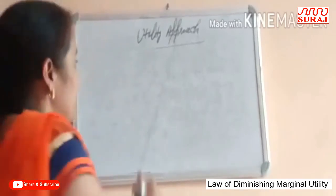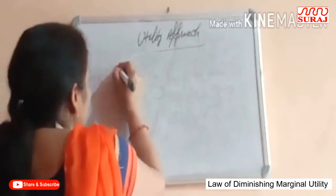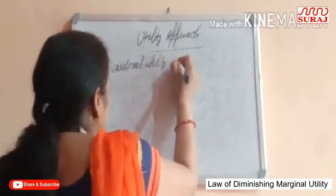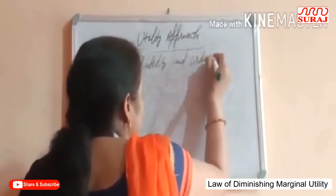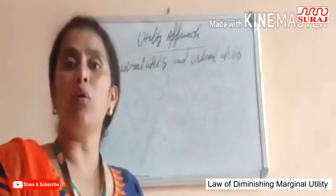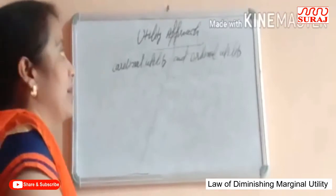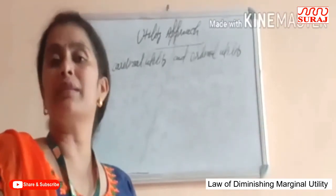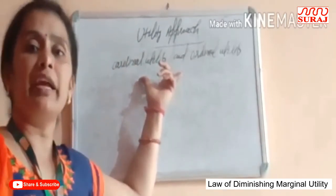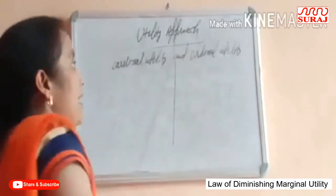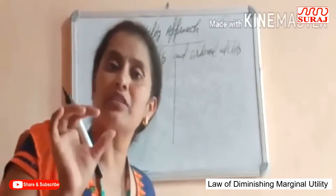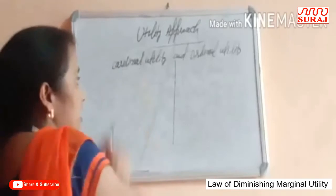The next question is: differentiate between cardinal utility and ordinal utility. Cardinal utility can be measured in terms of numbers or quantity. For example, values like 10, 12, 14, 9 — these are numbers and are included in cardinal utility.